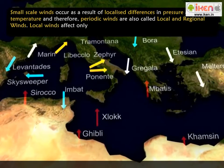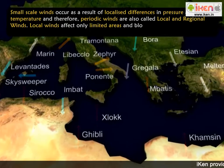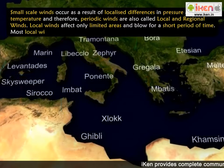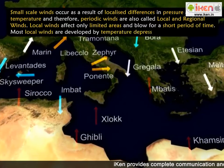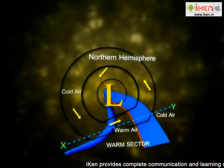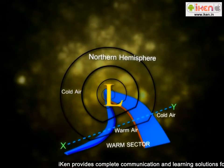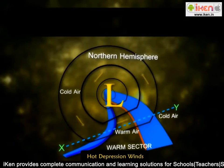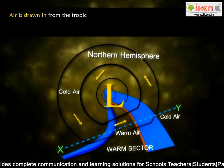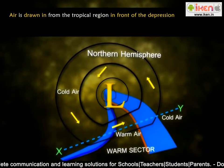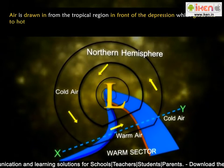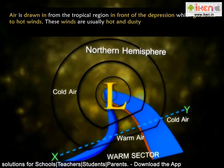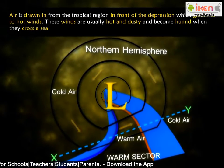Local winds affect only limited areas and blow for a short period of time. Most local winds are developed by temperature depression. There are two types of local winds. The first type is called depression winds. Air is drawn in from tropical regions in front of the depression, which gives rise to hot winds. These winds are usually hot and dusty and become humid when they cross the sea surface.